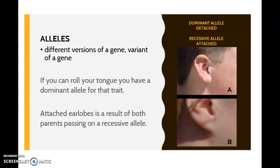If you have one dominant allele and one recessive allele, they are not the same, and therefore you would be heterozygous. However, you would still express the dominant allele characteristic, because a dominant allele will mask the recessive trait. If you can roll your tongue, you have the dominant allele for that trait. Attached earlobes result from both parents passing on a recessive allele — meaning both parents gave their offspring a recessive allele, resulting in the recessive characteristic or phenotype.